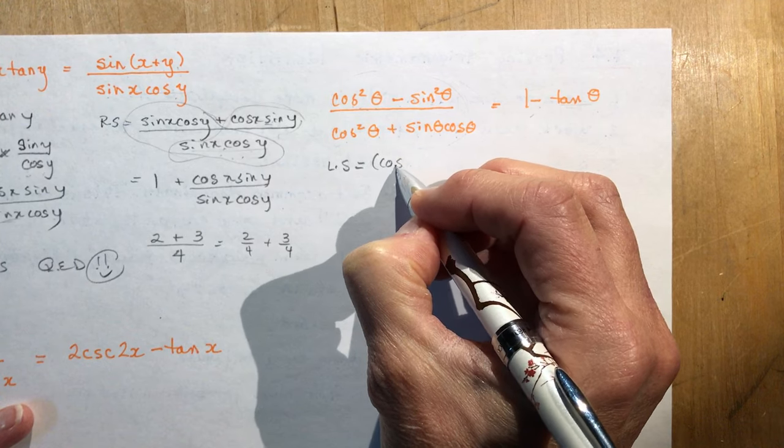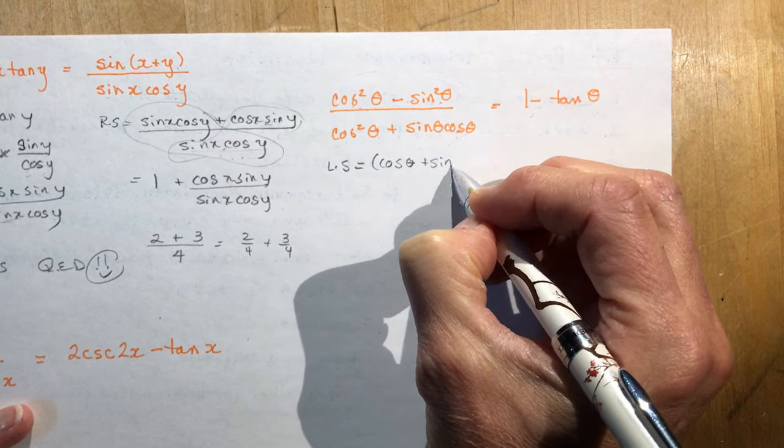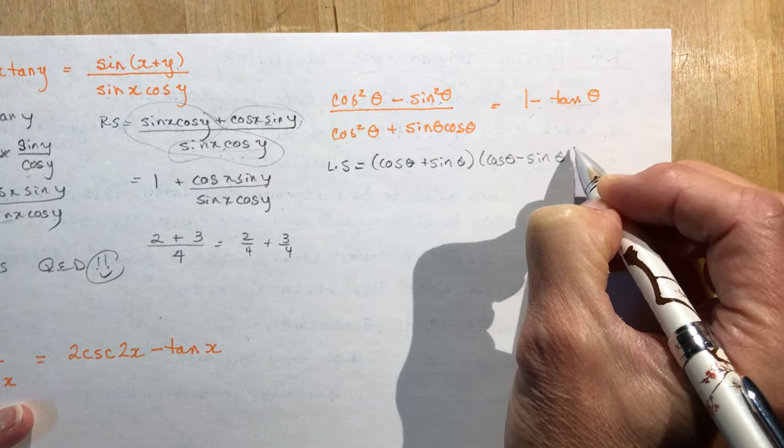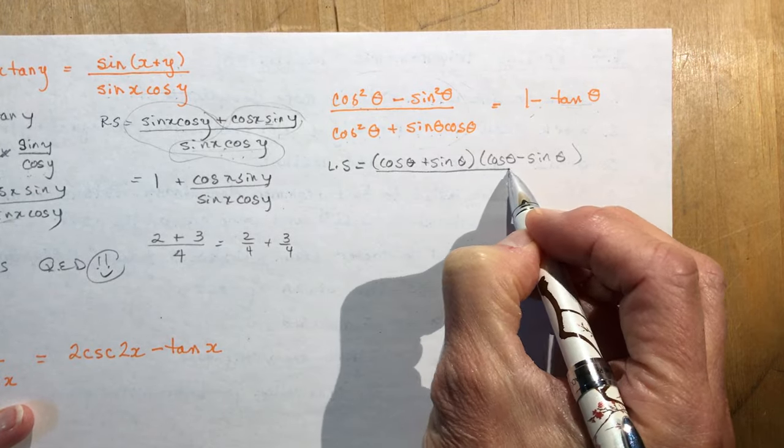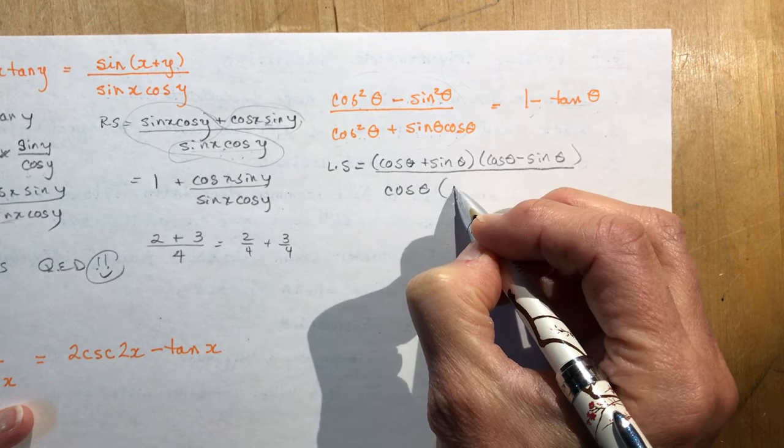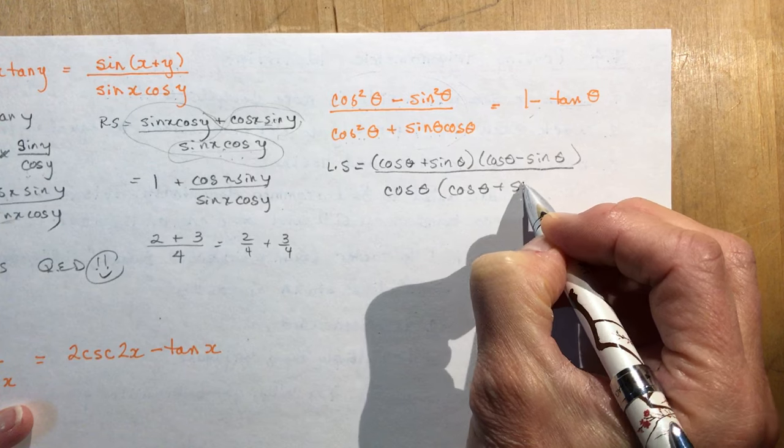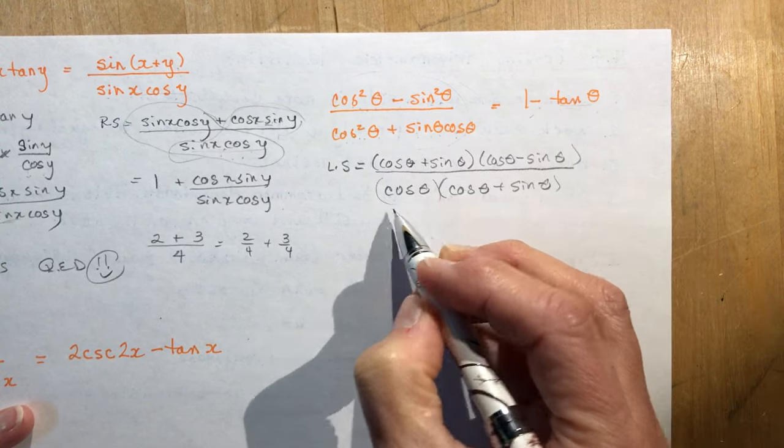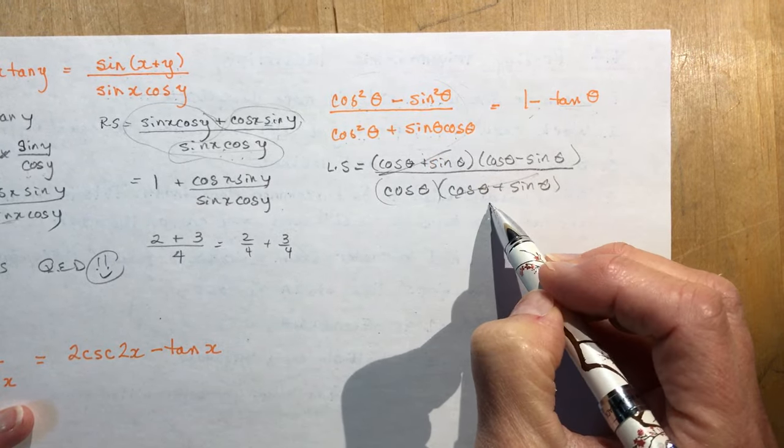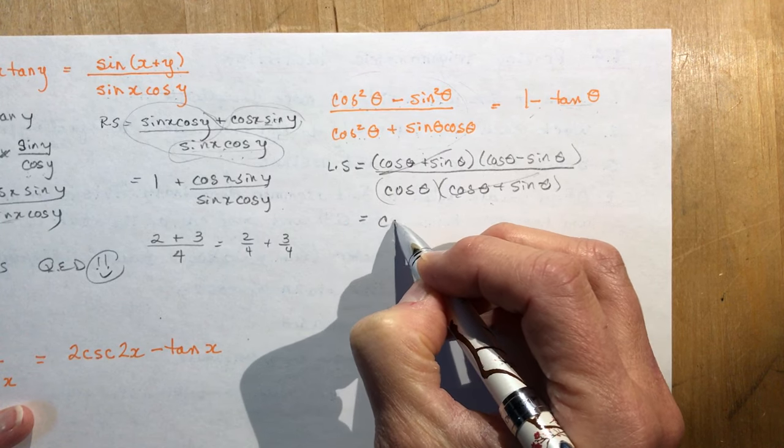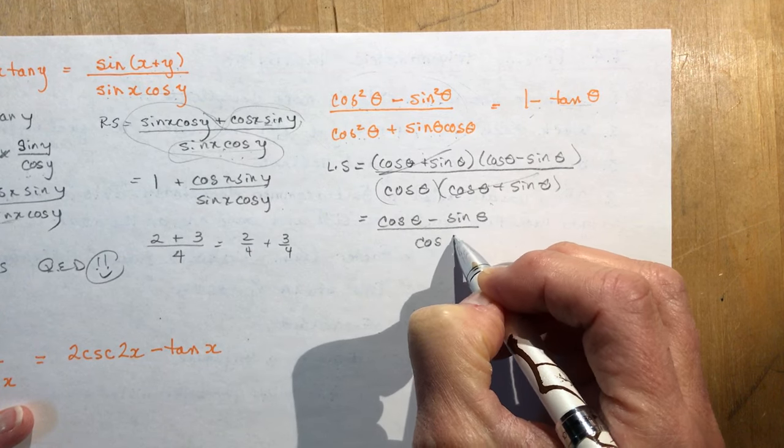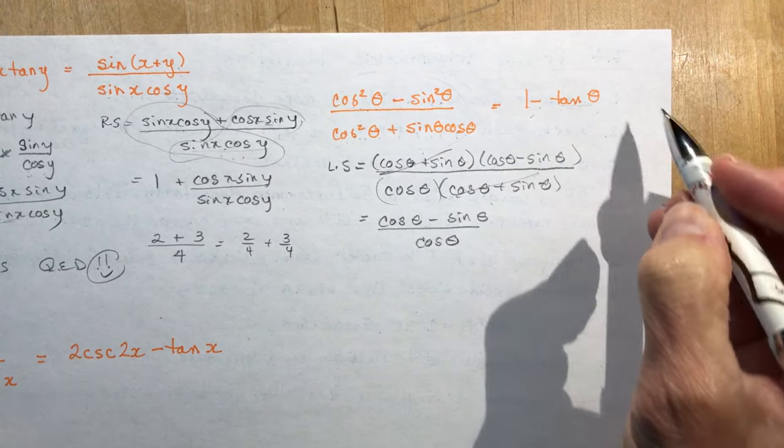So with the left side here I can see that these all have some factoring skills that I could use for them, right? cos²θ - sin²θ, that's a difference of squares, so I'm going to say cosθ + sinθ times cosθ - sinθ. And in the denominator I have a common factor, right? I can take out a cosθ. What am I left with? cosθ + sinθ. Now all these things are multiplied together, right? And once things are multiplied together you can cancel them out as little packages, divide into each other, and that leaves me with cosθ - sinθ over cosθ.